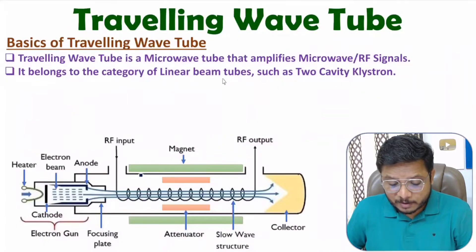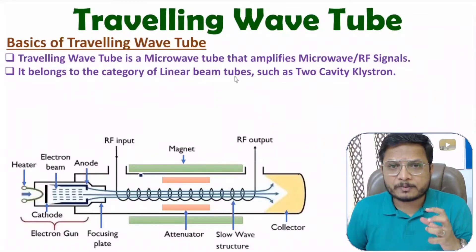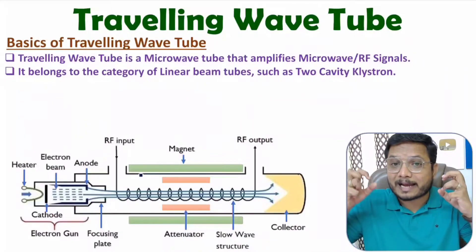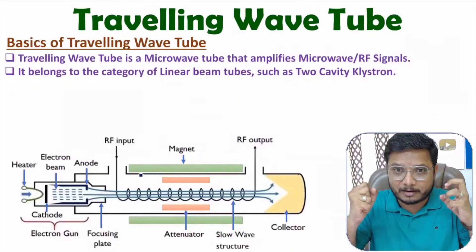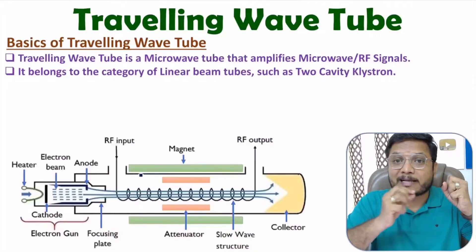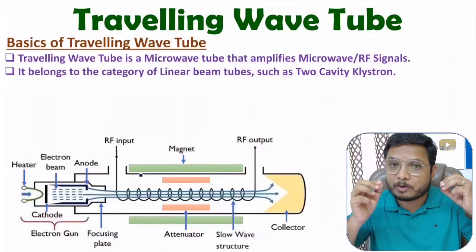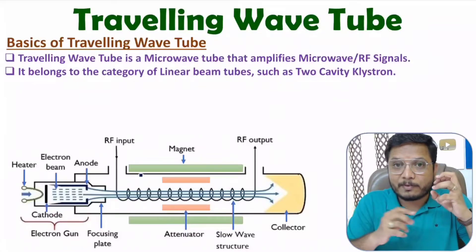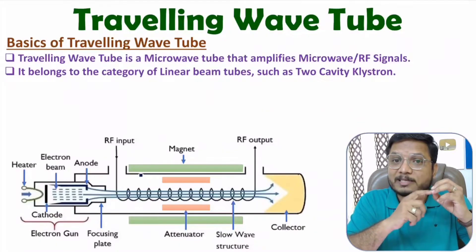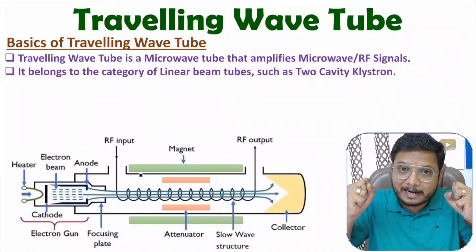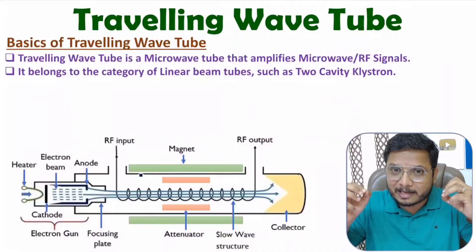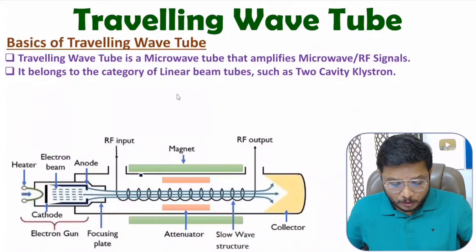In linear beam tubes, at one end we have an electron gun and at the other end we have an electron beam collector. The electron gun transmits the electron beam towards the collector linearly. The electron gun is connected with the cathode, and the collector receives the electron beam linearly.